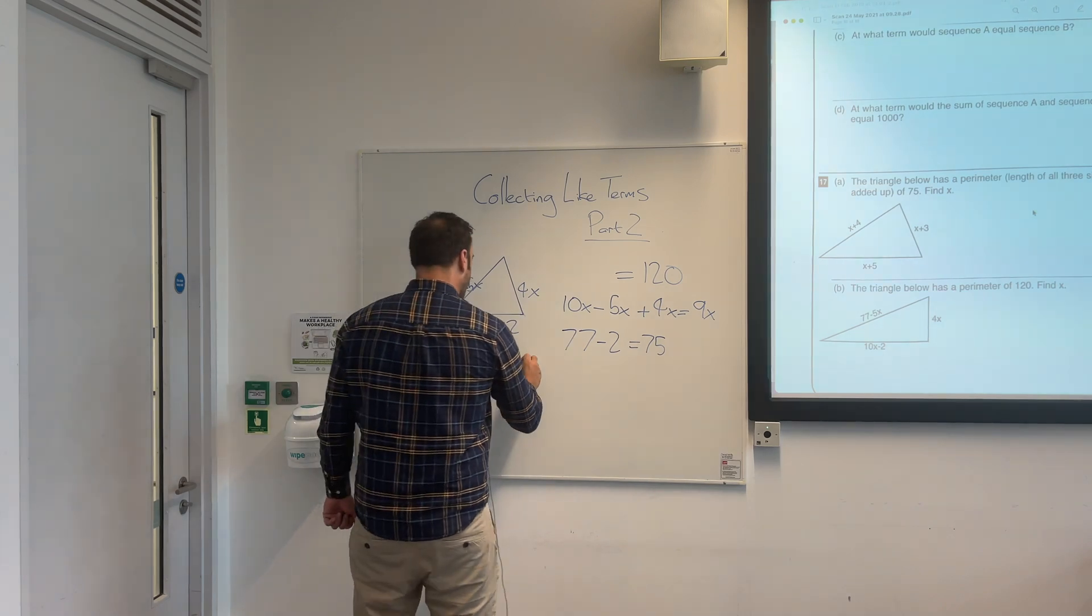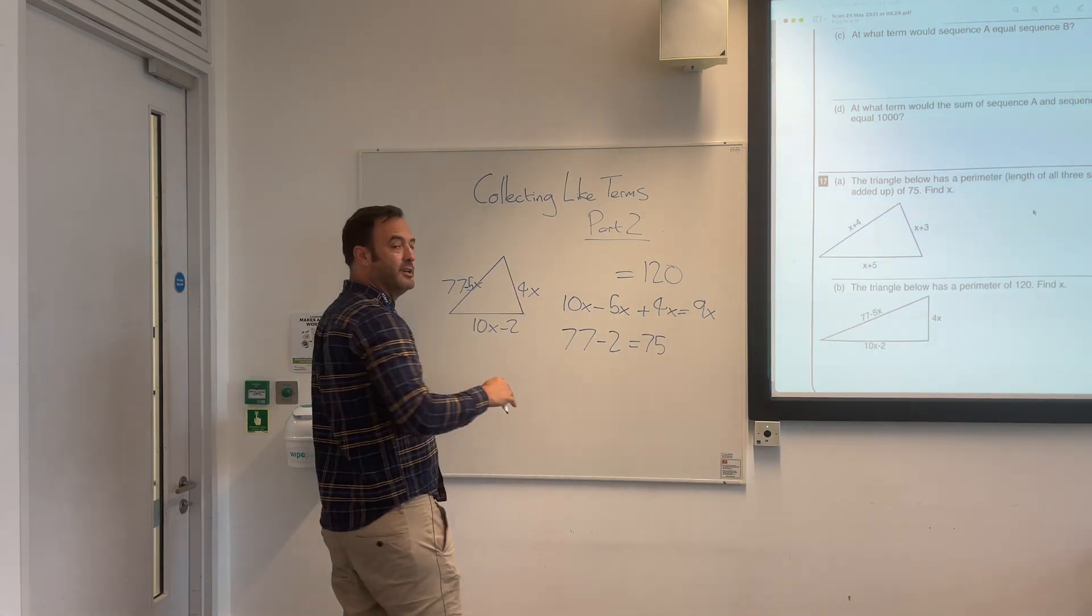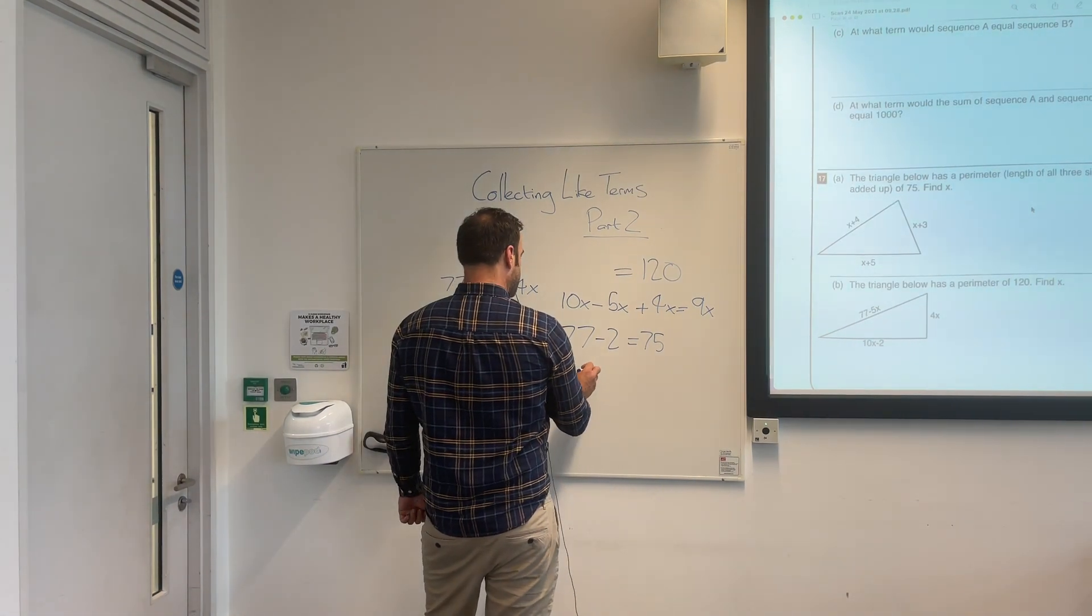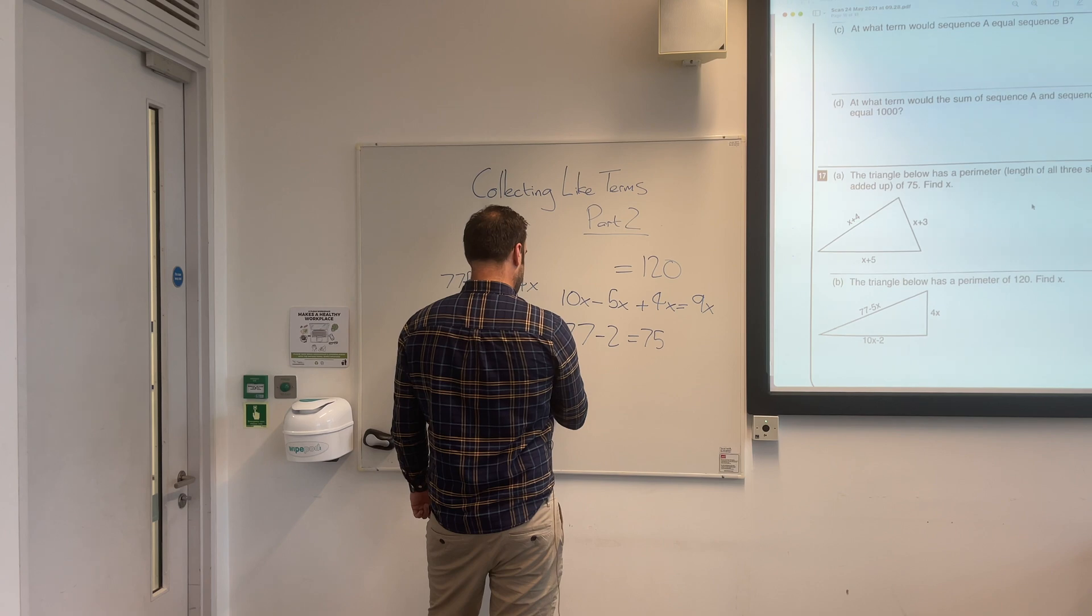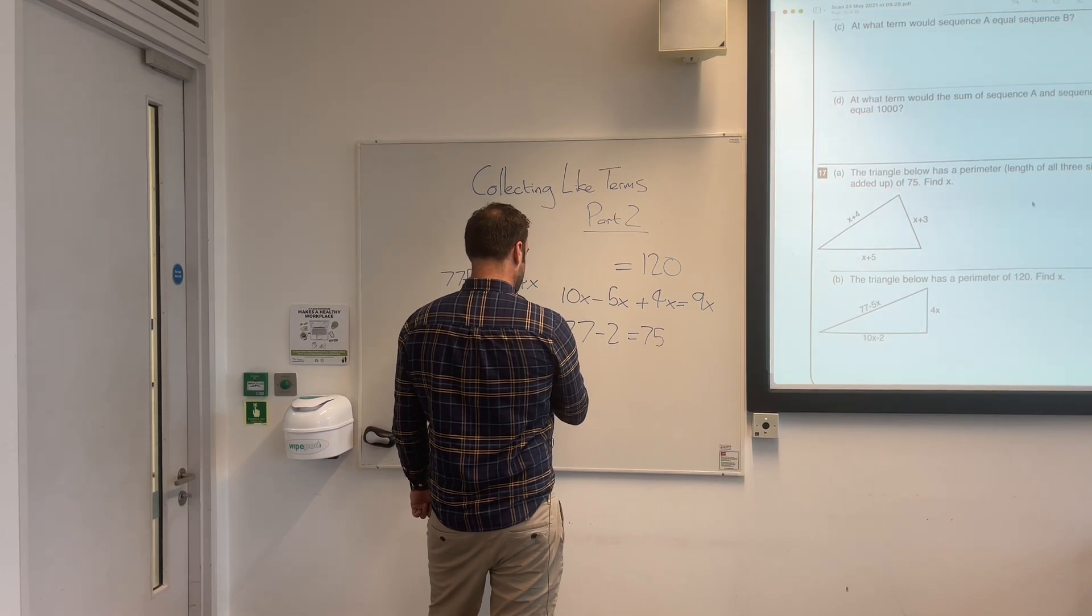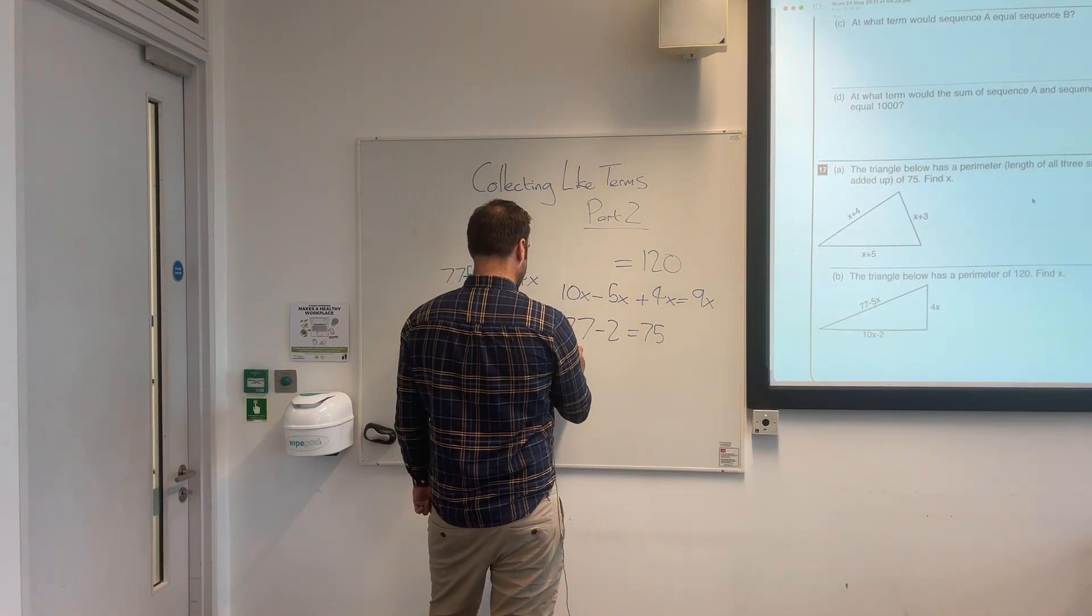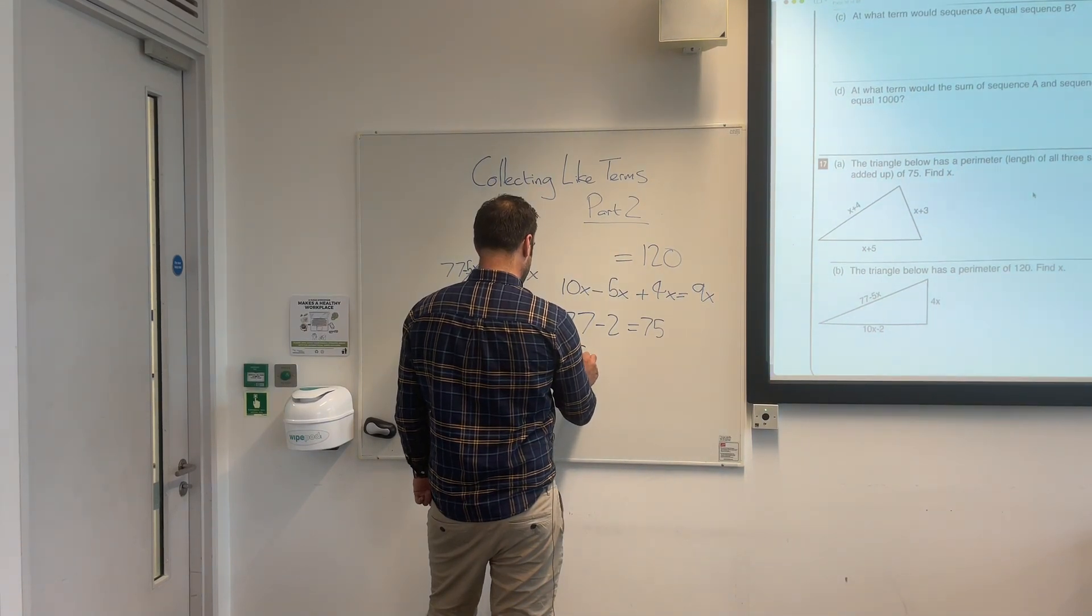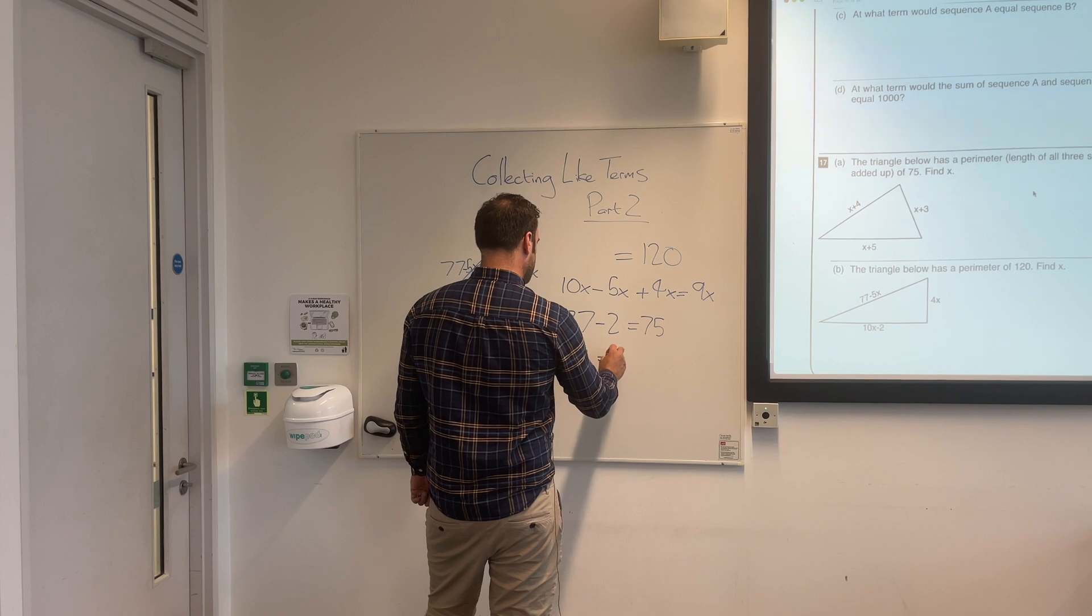OK, so what we've actually got here, when we simplify this using collecting like terms, is 9x plus 75 equals 120.